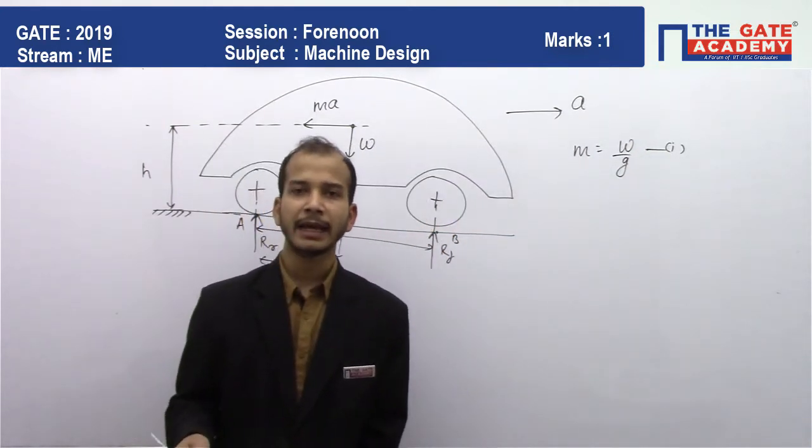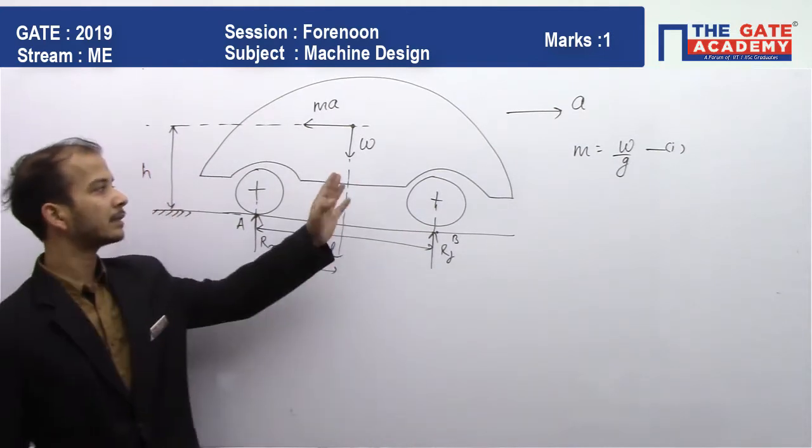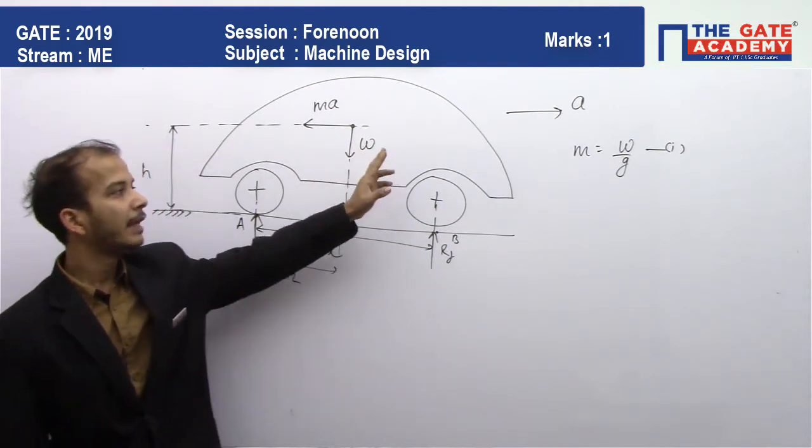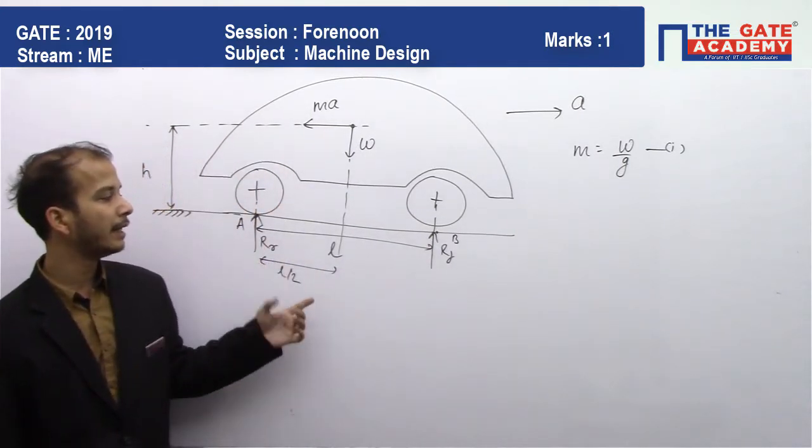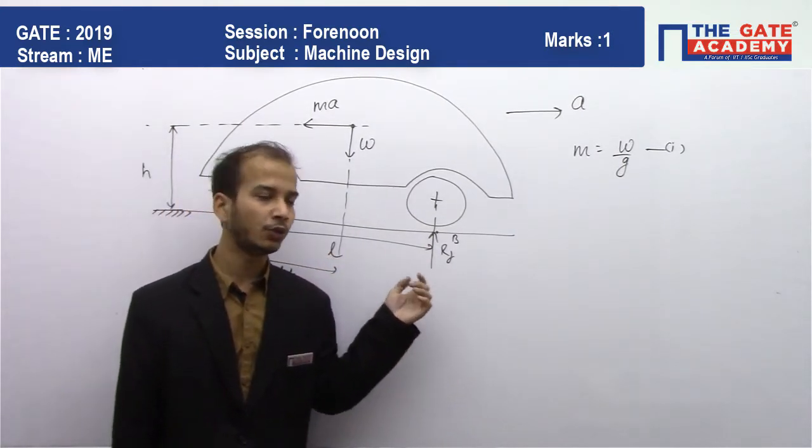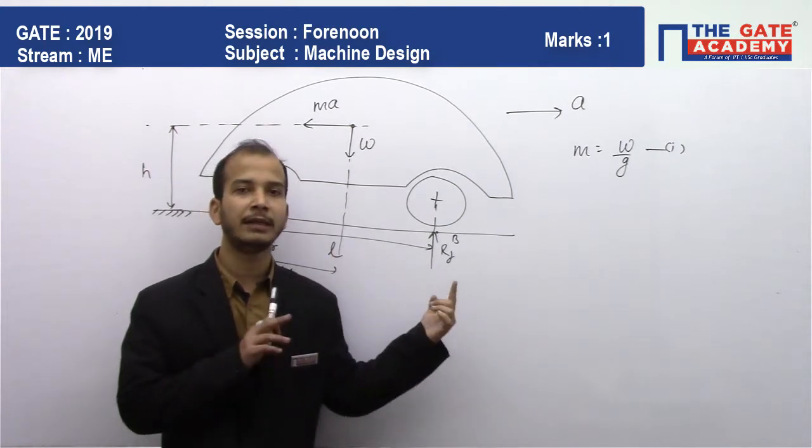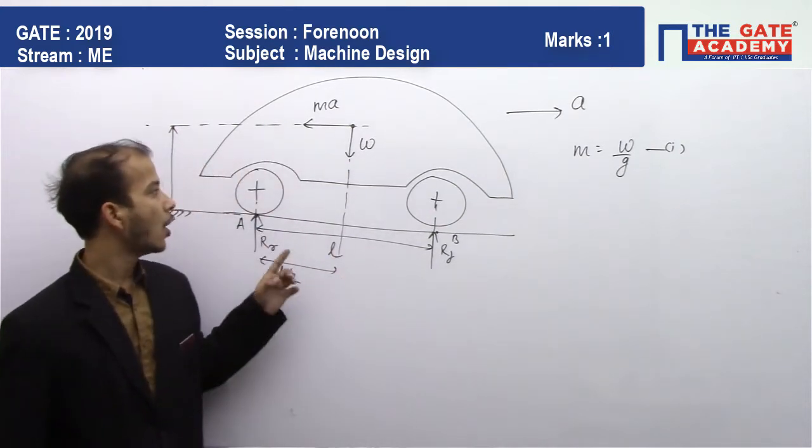Determine Rf and Rr in terms of W, h, l, and a. This car has weight W, acceleration a. We need to calculate Rf and Rr. The distance between the wheels is l, and the height of the center of gravity from the base is h.